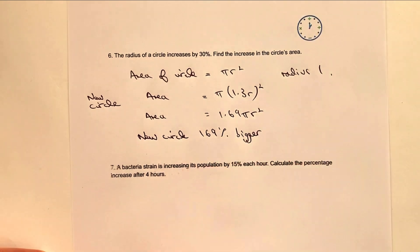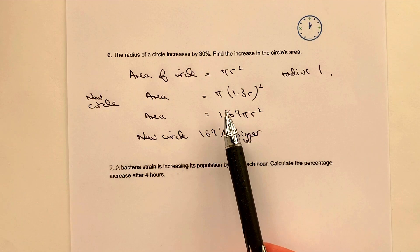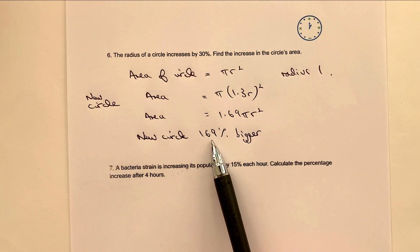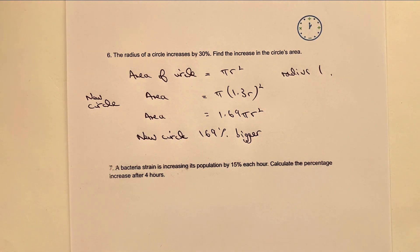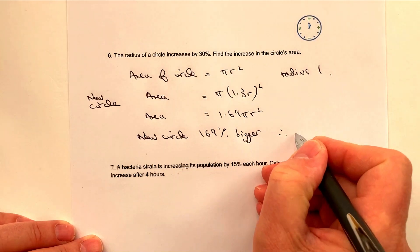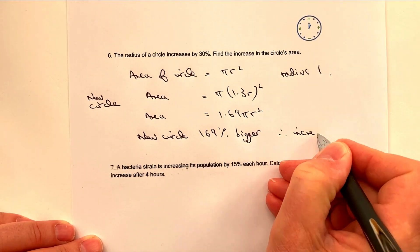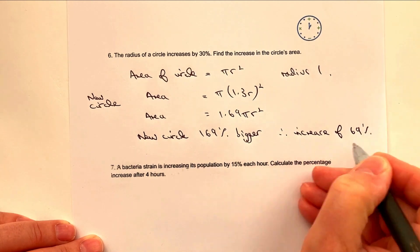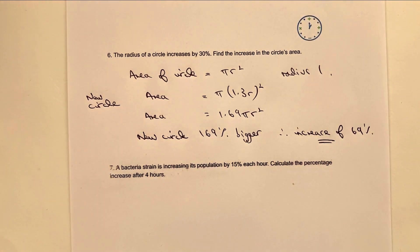So in other words, what we're saying is that the new circle is 169 percent bigger. In other words, I've multiplied it by 1.69, which is the decimal equivalent to 169 percent. And therefore, the increase in the circles area must be 69 percent. So it does take a little bit of time to kind of get your head around these sorts of questions. But again, once you've seen them, hopefully you'll be okay with them.